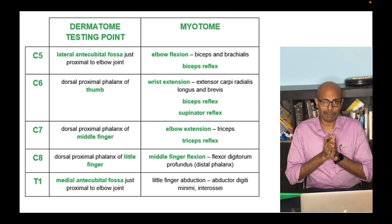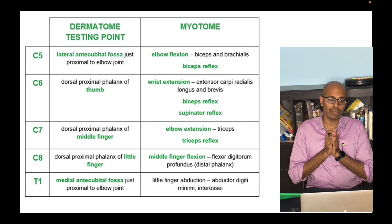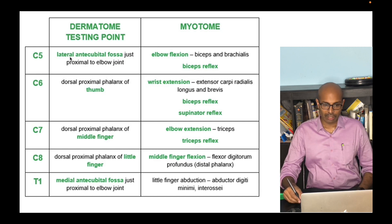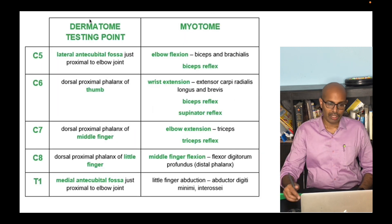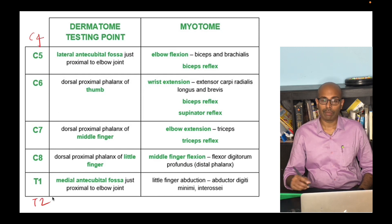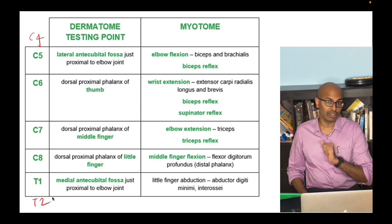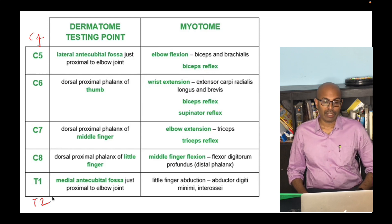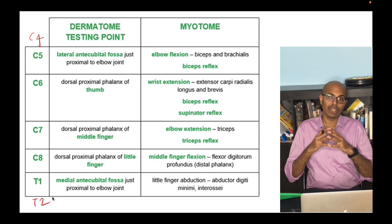We have five roots which form the brachial plexus: C5, C6, C7, C8, and T1. If you have a contribution from C4, it is called a prefixed plexus, and if you have a contribution from T2, it is called a postfixed plexus. Now let us go through the dermatomal distribution of these nerves.